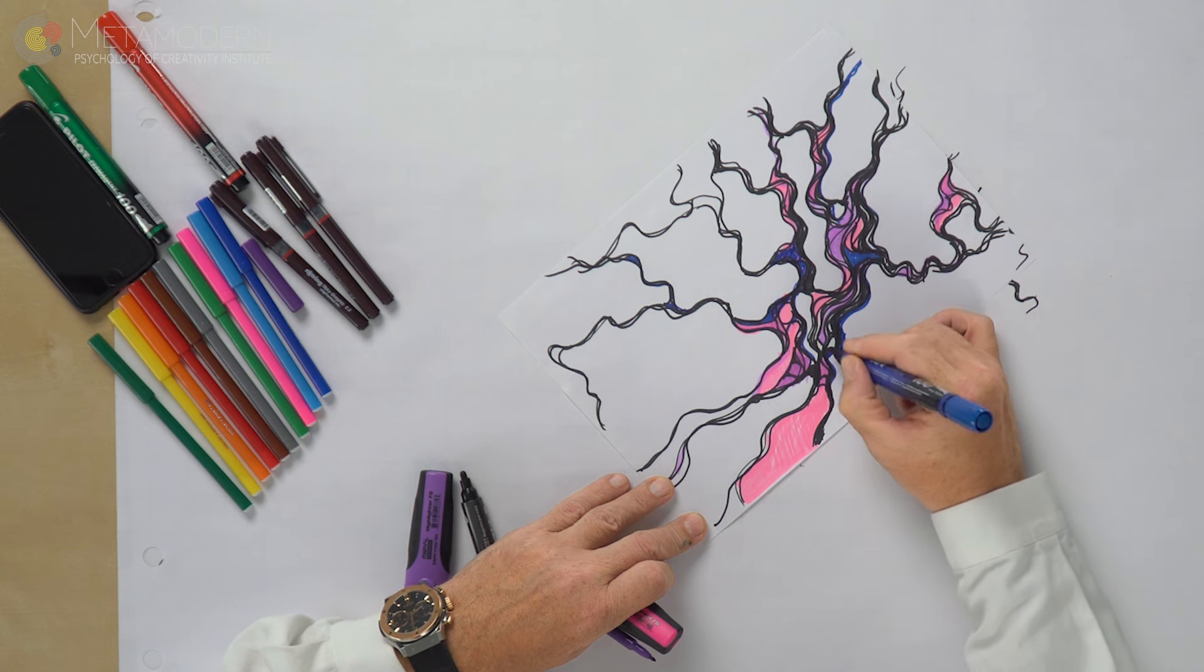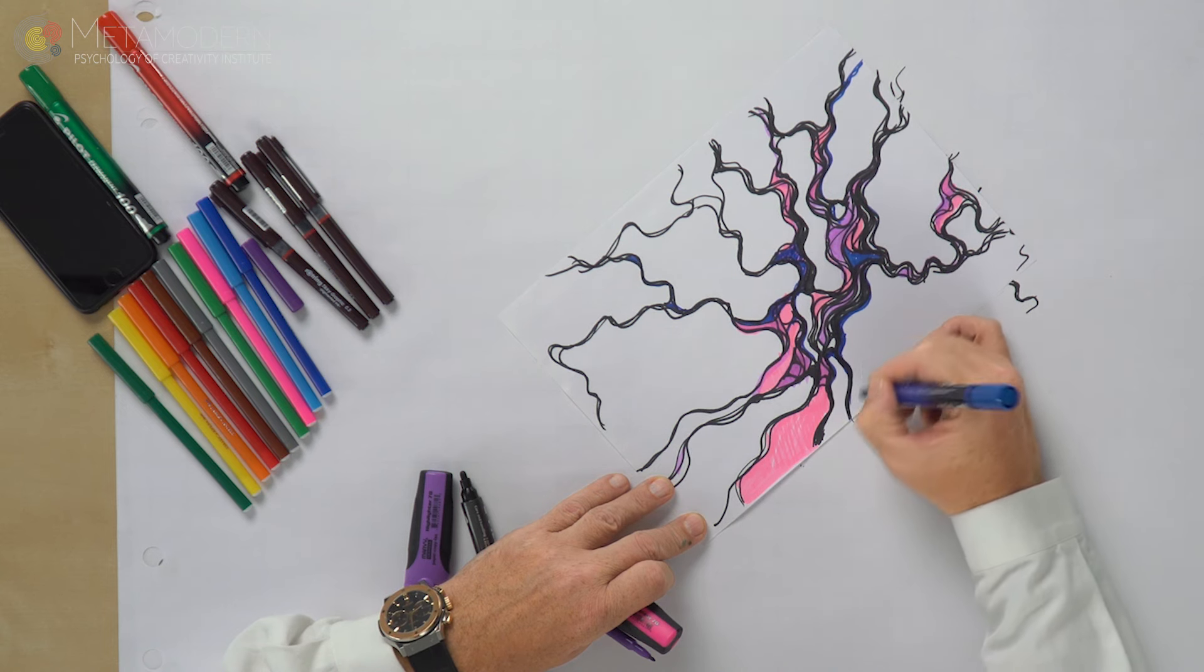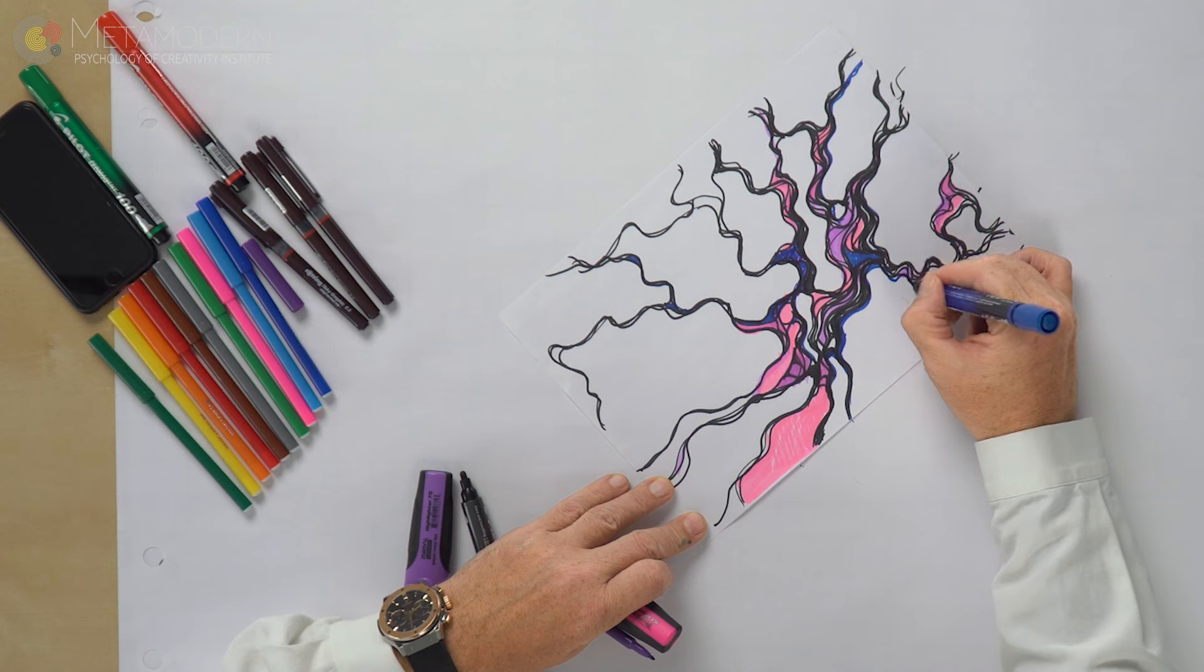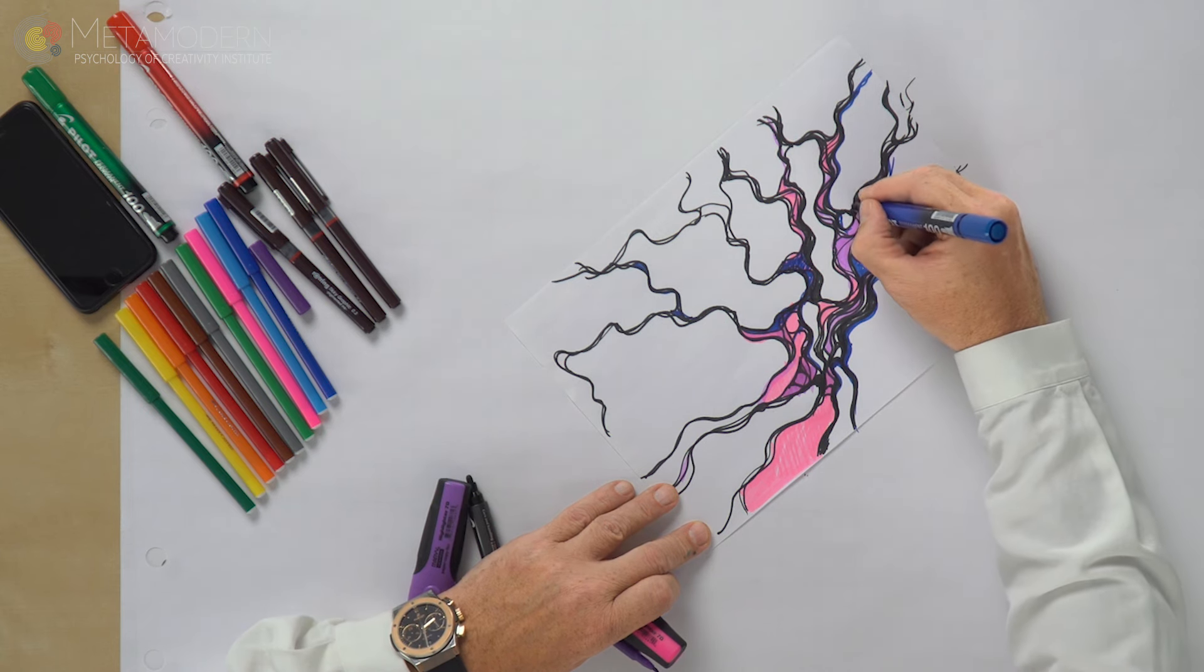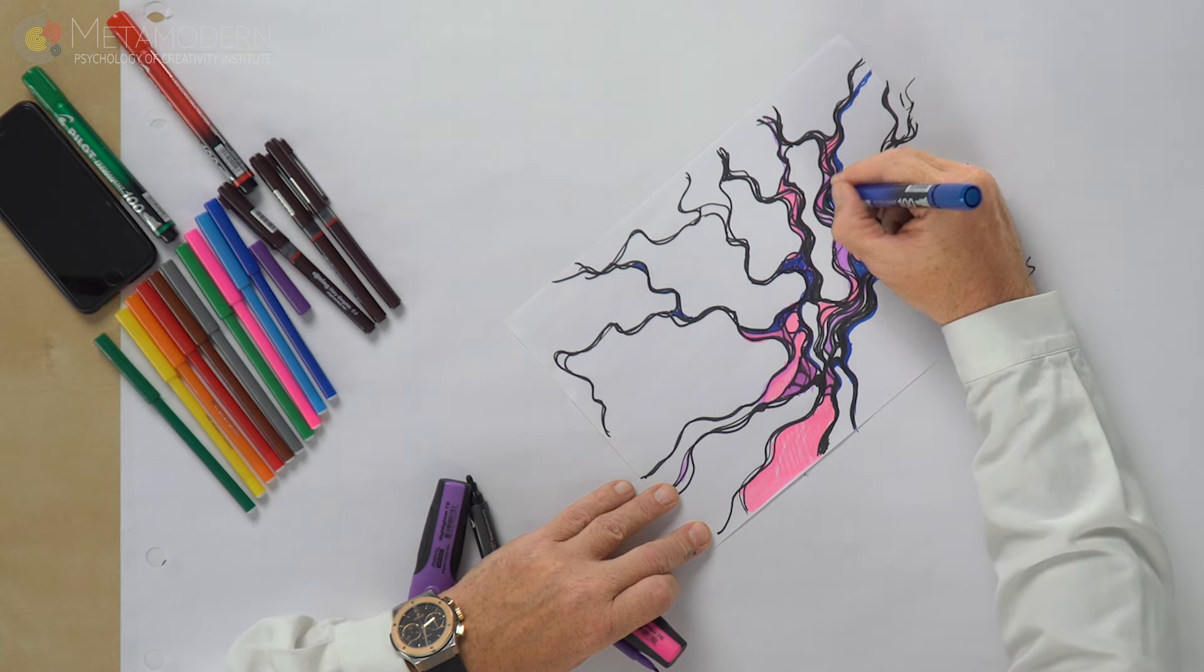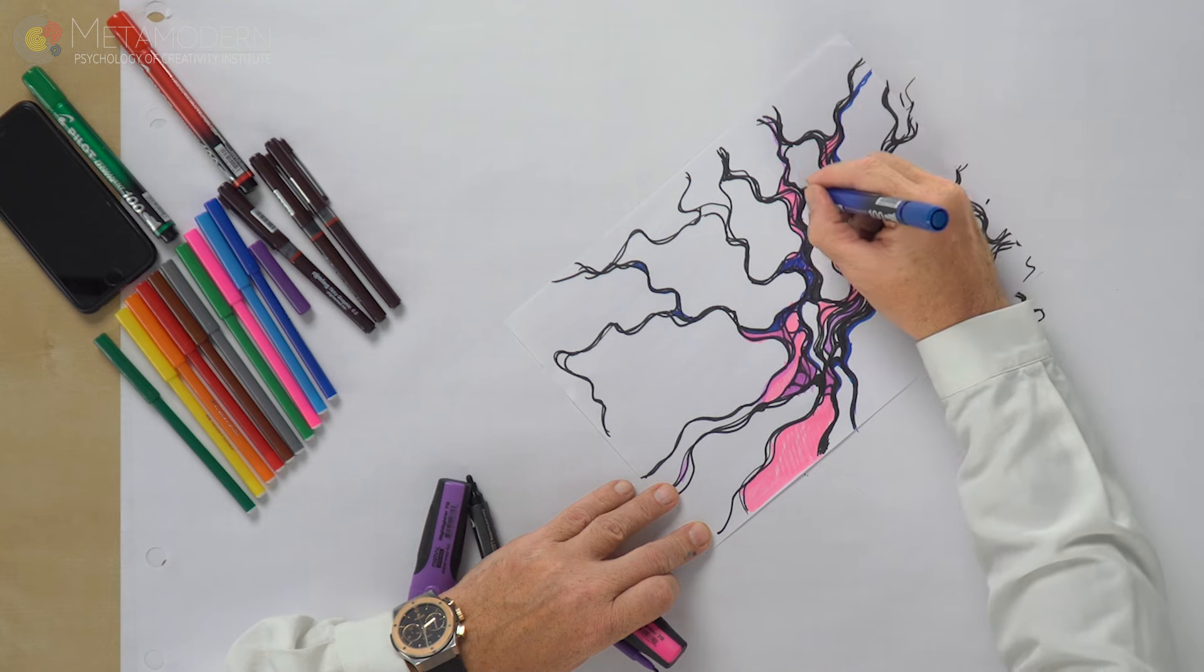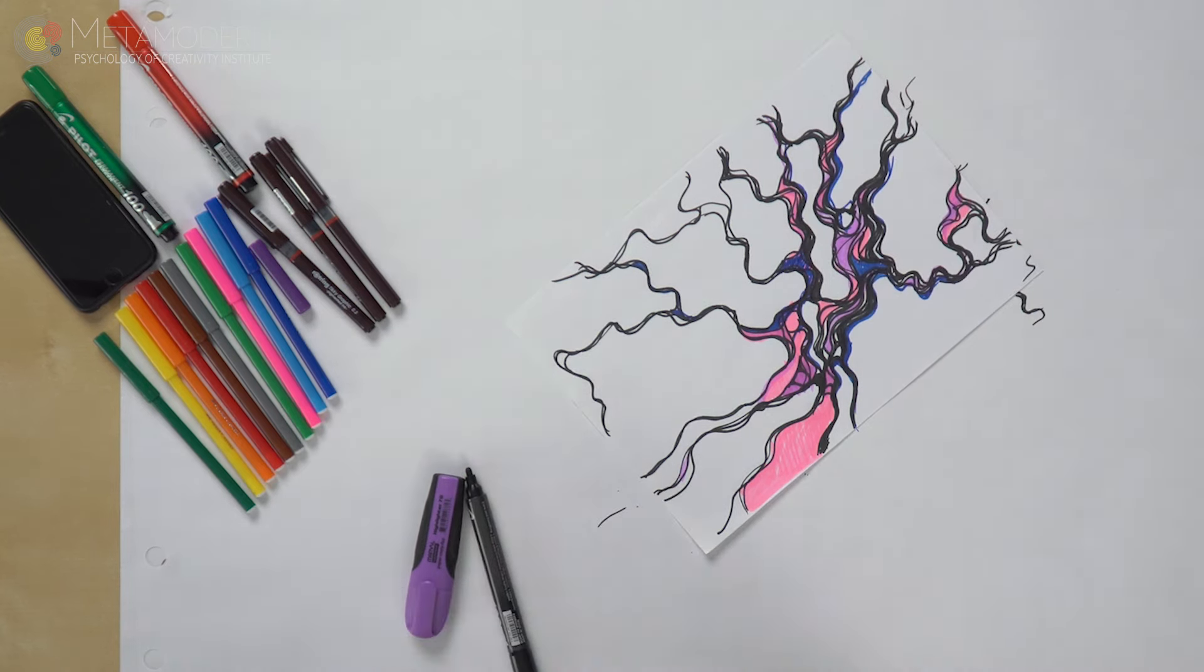And for you we have a neurographic line, a line for people who are experiencing pleasure, joy, who are in the state of Eros. A neurographic line is the Eros line, a line that celebrates life.